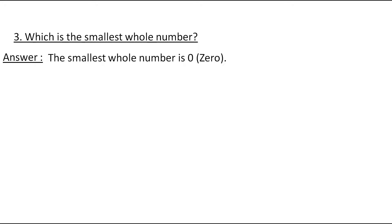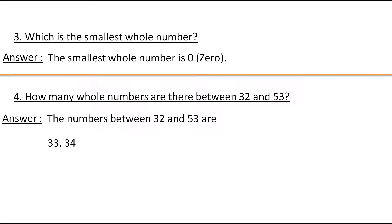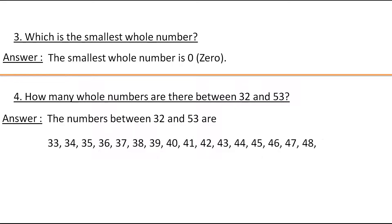Now let's see what is the fourth question: How many whole numbers are there between 32 and 53? The numbers between 32 and 53 are 33, 34, 35, 36, 37, 38, 39, 40, 41, 42, 43, 44, 45, 46, 47, 48, 49, 50, 51, and 52. These are the numbers present between 32 and 53.